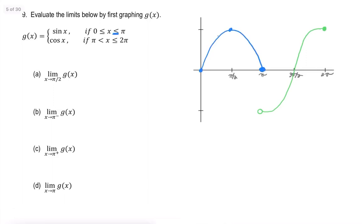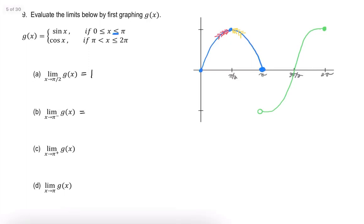As I get closer and closer to π/2 from the left, and at the same time thinking about what's happening as I get closer and closer to π/2 from the right, both of those y values are closing in on the same value — the y values are getting closer and closer to 1. For the limit as x approaches π from the left, those y values are getting closer and closer to 0.